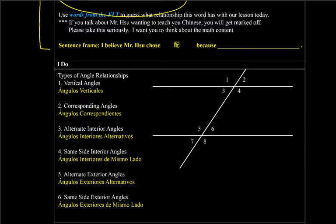First one is called vertical angles. Primer, tenemos ángulos verticales. They mean angles that are across from each other. Ángulos a través. For example, uno y cuatro. One and four. They are across from each other. Están a través.